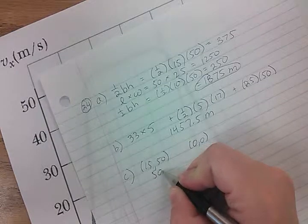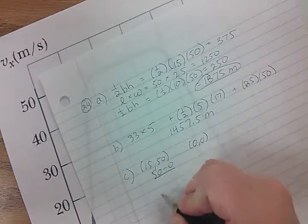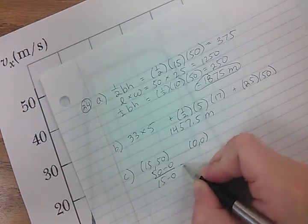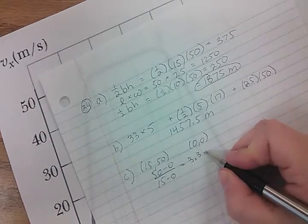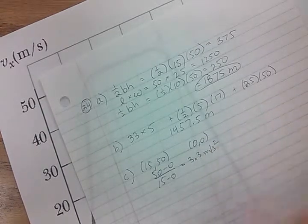So 50 minus 0 over 15 minus 0, and you end up with 3.3 meters per second squared.